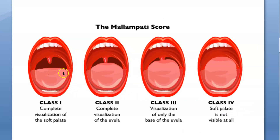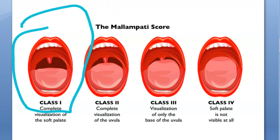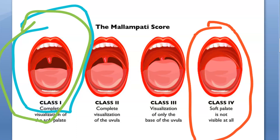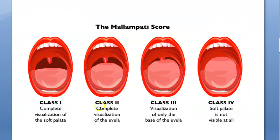If you ask a patient to open their mouth, put their tongue out as far as possible and say "ah" — or without making noise if possible — and you are able to see everything clearly, then it is good. However, if the tongue is so large that you're not able to see the soft palate, that is grade four. This is the modified Mallampati score — the newer version. There are four classes or grades: one, two, three, four. Four is where the tongue is very large and the soft palate is not visible.